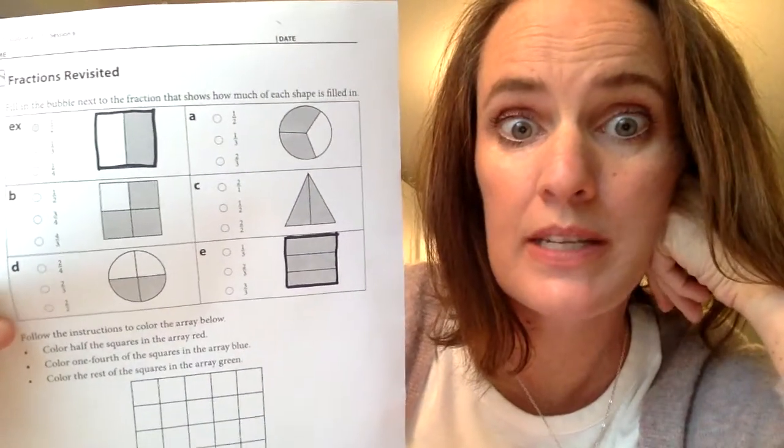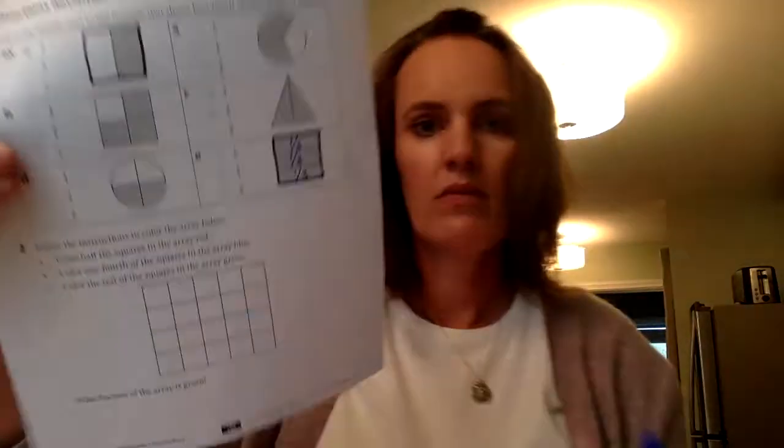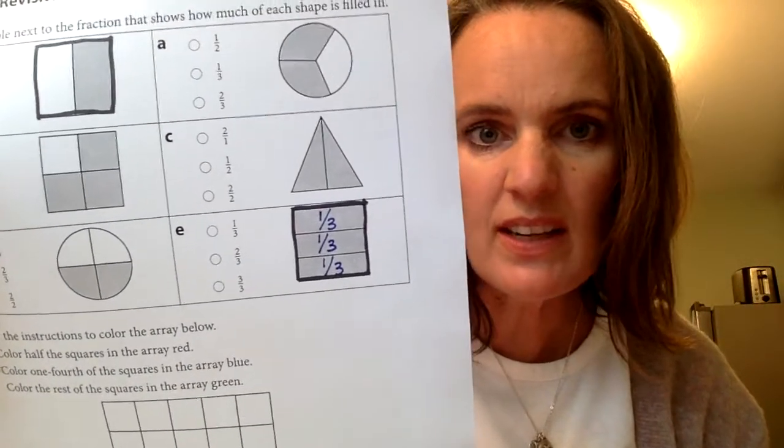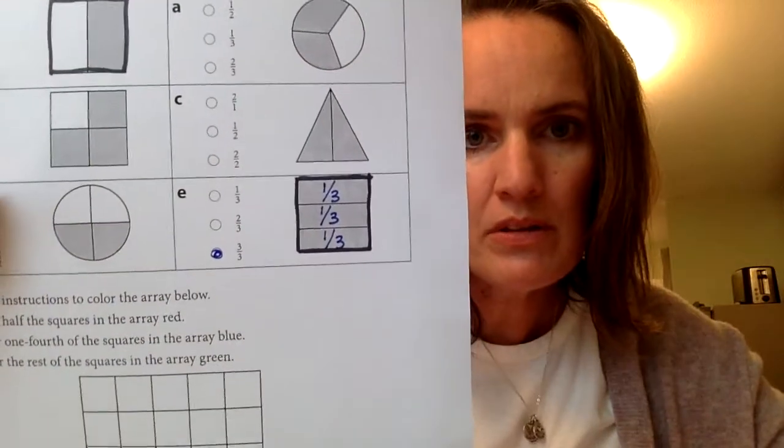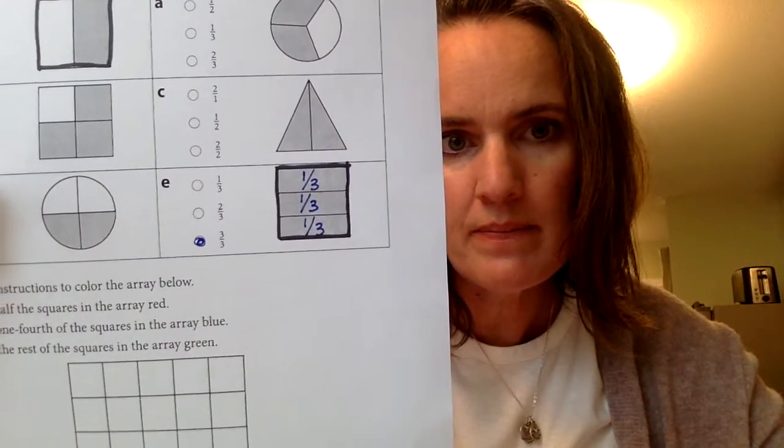Yeah, three one third pieces are shaded in. So if I were to label those, it would look something like this. One third, another one third, and another one third. And all three are filled in on that one. So I would color in the dot with three one third pieces.